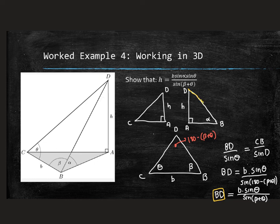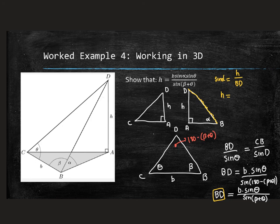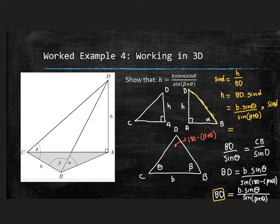In the right-angle triangle DAB, we have angle alpha, opposite H, and hypotenuse BD. So sine alpha equals H over BD, meaning H equals BD times sine alpha. Substituting our expression for BD: H equals b times sine theta over sine(beta plus theta), all multiplied by sine alpha. That gives H equals b times sine alpha times sine theta, all over sine(beta plus theta), which is exactly what we needed to prove.